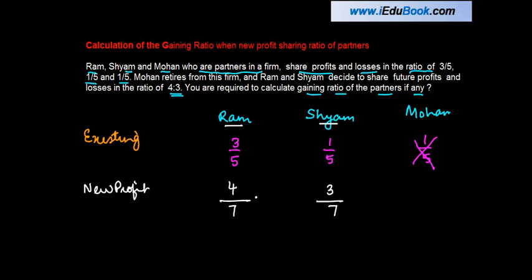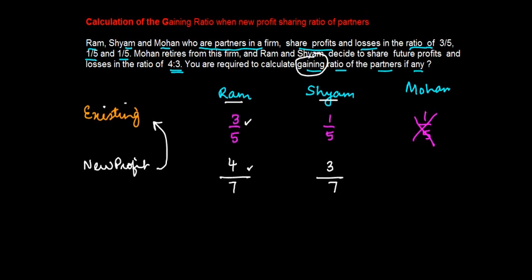Now you are told to find the gaining ratio. What is gaining ratio? It's nothing but the new profit sharing ratio minus the existing sharing ratio. For Ram, on an existing basis he got 3/5 and now he's getting 4/7. We need to see if he's made any gain.